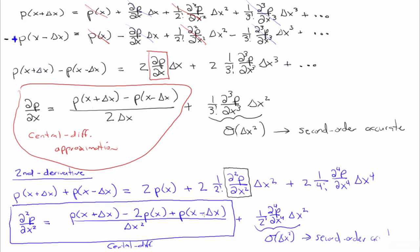So those are our finite difference approximations: forward difference, backward difference, and central difference for the first derivative, and central difference for the second derivative.